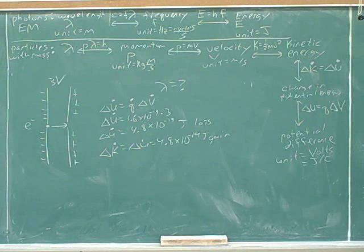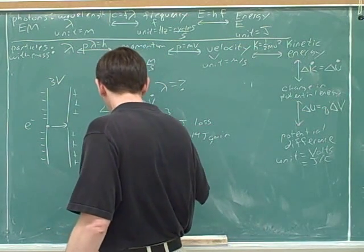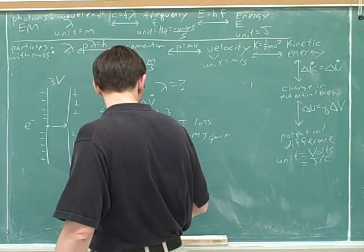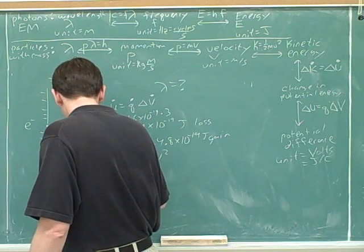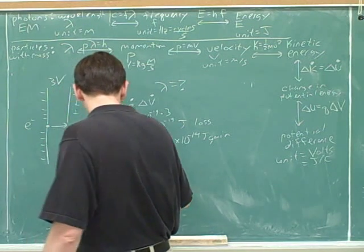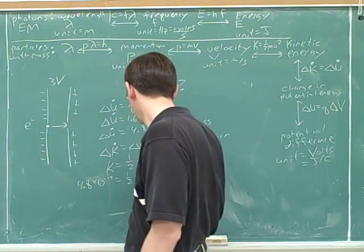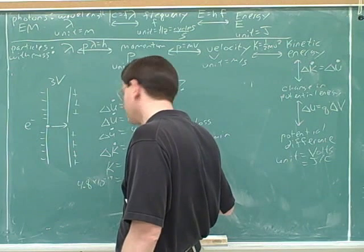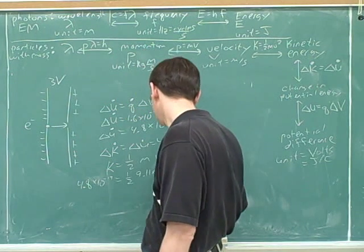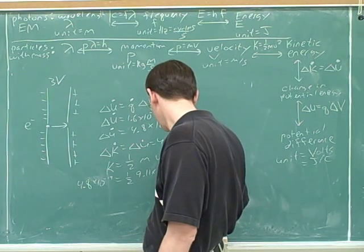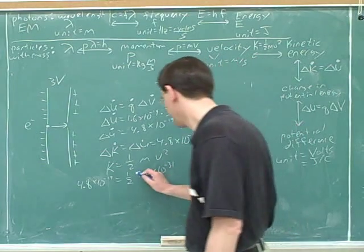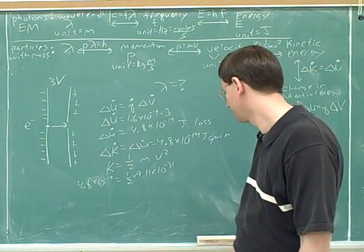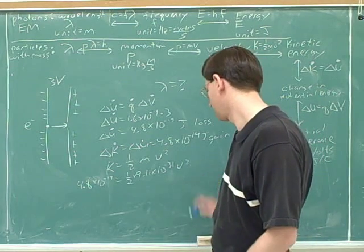Now I want to find velocity. So I have 4.8 times 10 to the negative joules equals one half of the mass of an electron, which is something I can probably look up. Yeah, so let's look that up. Electron mass is 9.11 times 10 to the negative 31. Yeah, you can always look that up. I can remember it as 9.11. Alright, so 9.11 times 10 to the negative 31. That's right. So, and then v squared.